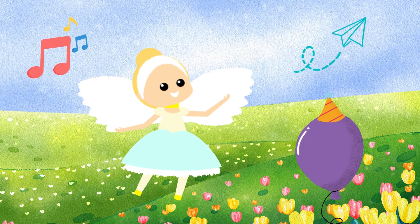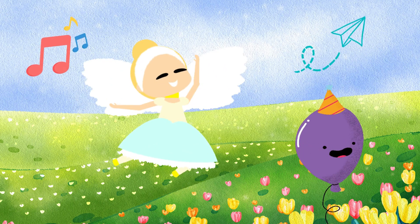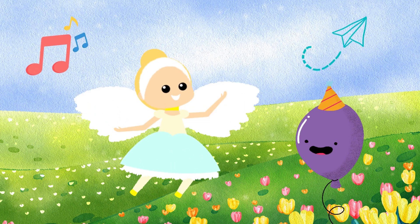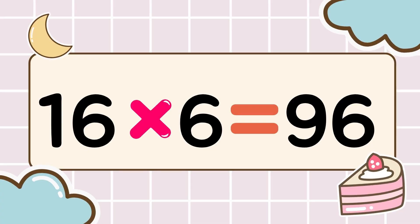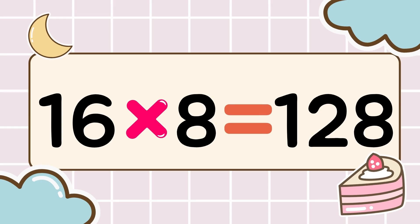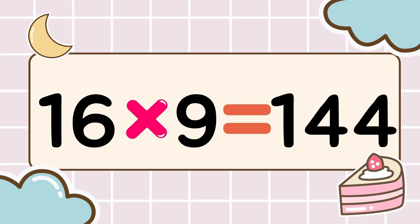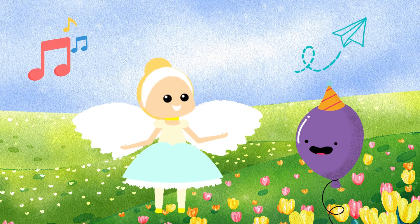16 times 5 is 80. Wow, you're doing great! Multiplication power charged up! Next round, let's go! 16 times 6 is 96. 16 times 7 is 112. 16 times 8 is 128. 16 times 9 is 144. Learning multiplication is fun.